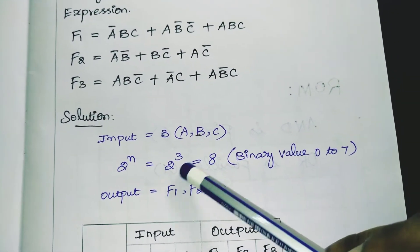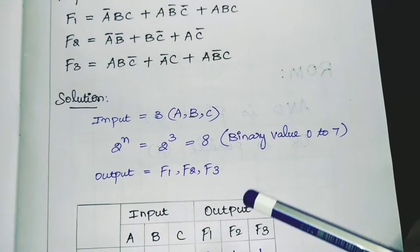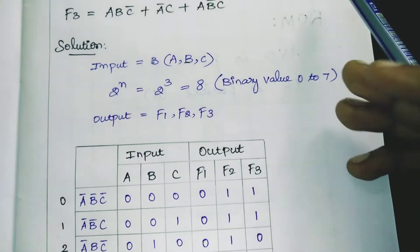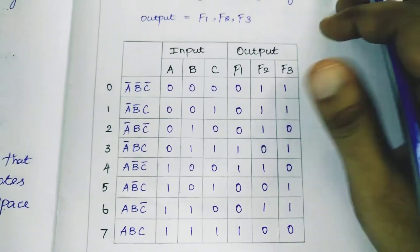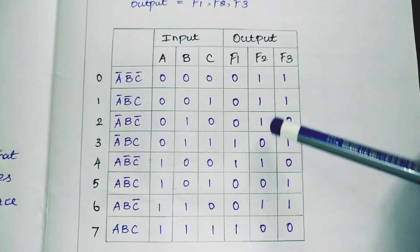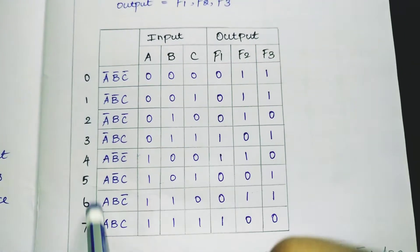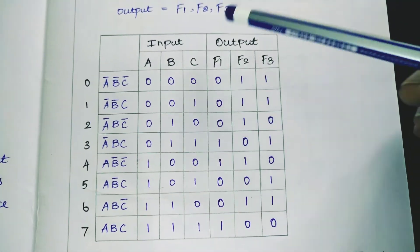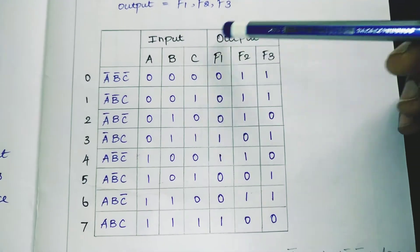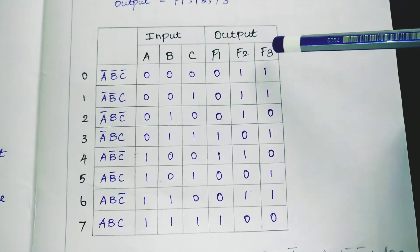Since there are 3 inputs, 2^3 equals 8, so we have to write the binary values from 0 to 7, giving 8 values. Set up a tabular column with inputs A, B, C and outputs F1, F2, F3.